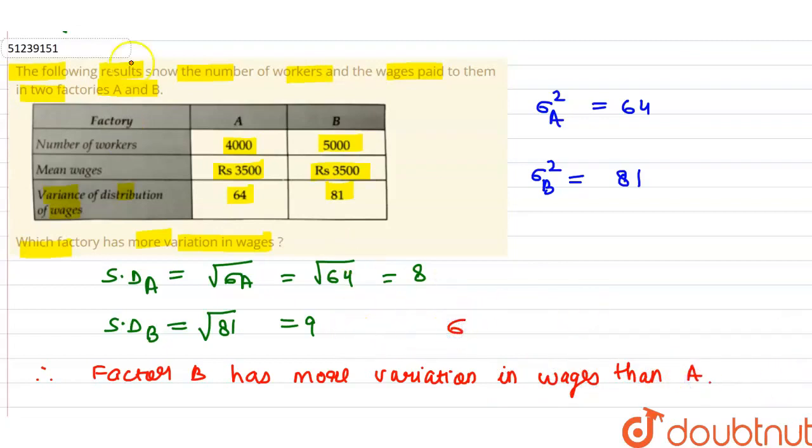Because we can say that the standard deviation of B is greater than the standard deviation of A. Sigma B is greater than Sigma A, and both means are the same. Thank you friends.